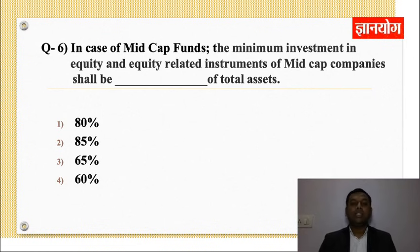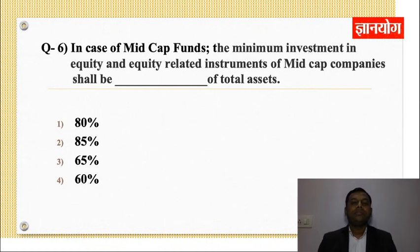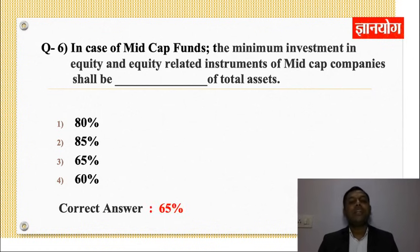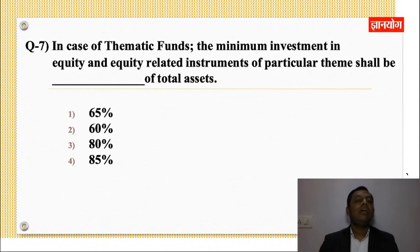Question No.6: In case of mid cap funds, the minimum investment in equity and equity related instruments of mid cap companies shall be __ of total assets? Options: 80%, 85%, 65%, 60%. Correct answer: 65%. Large cap के लिए 80%, ELSS के लिए 80% equity, और mid cap companies के लिए minimum 65% mid cap companies में होना चाहिए — यह याद रखना होगा।